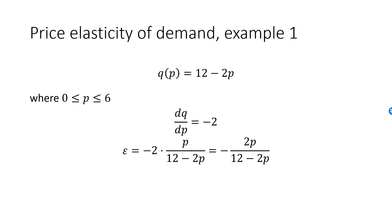If you want to emphasize that epsilon depends on P, then you can write on the left hand side, epsilon of P instead of simply epsilon. For example, at P equal to 3, epsilon is minus 1, but we can calculate epsilon for any P between 0 and 6, except for P equal to 6, at which the denominator becomes 0.